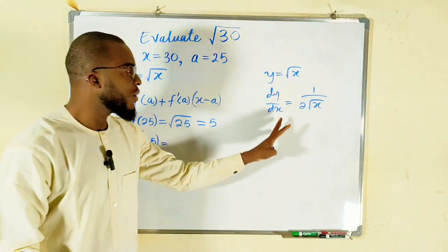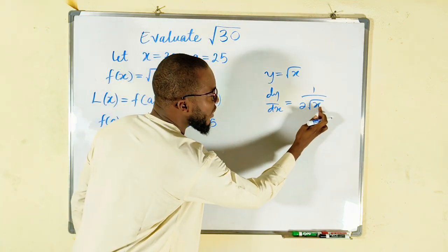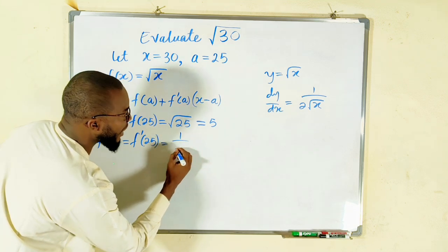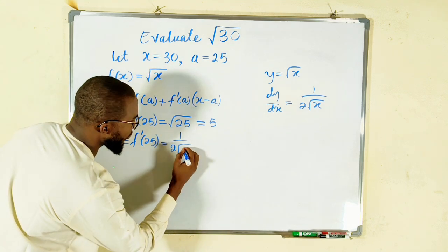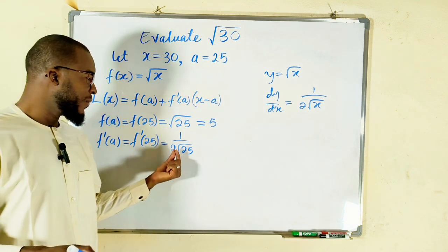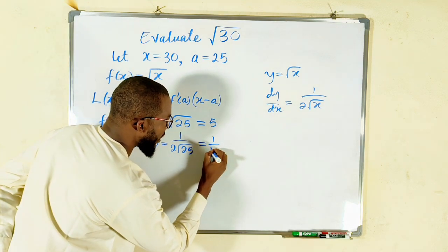So therefore, since we are looking for f'(a), all we have to do is substitute 25 in here. So this would be 1 divided by 2 multiplied by the square root of 25. Square root of 25 is 5. 5 times 2 is 10. So this is equal to 1 divided by 10.